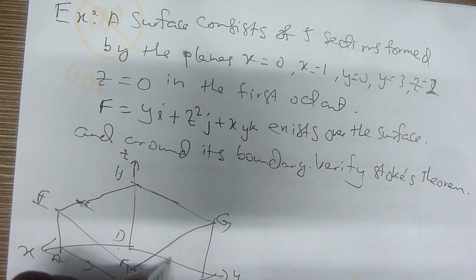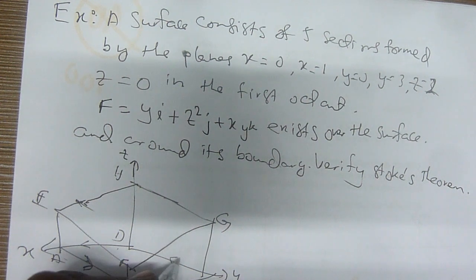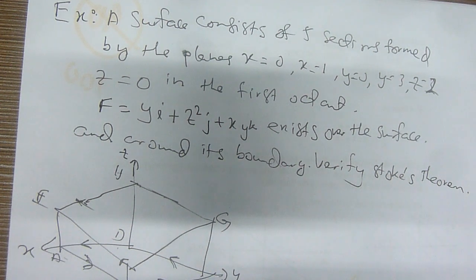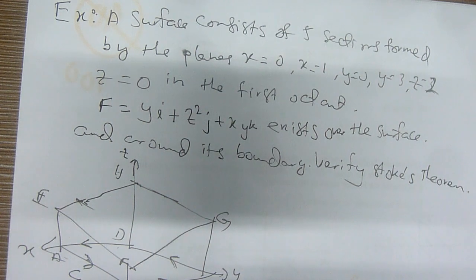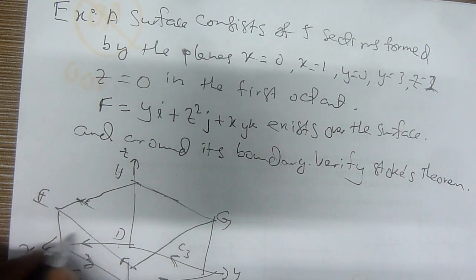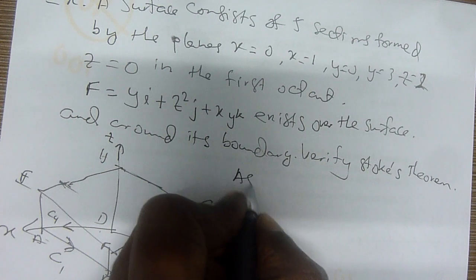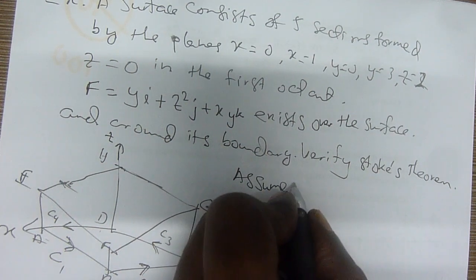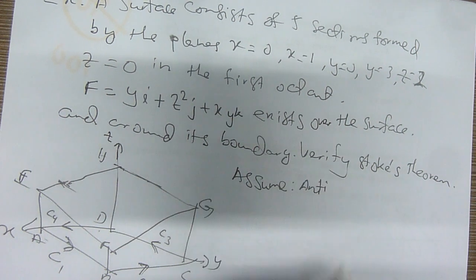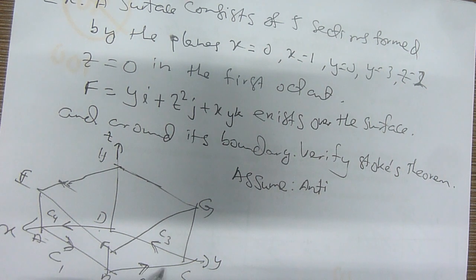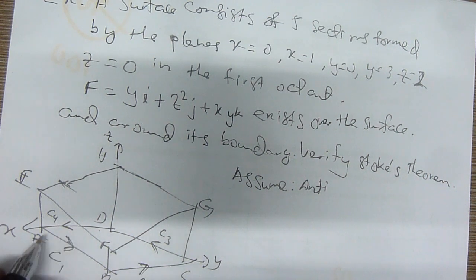Similarly, we follow the same approach. In this case you cannot assume freely — I will let you know because the boundary of the surface must always be given. Depending on the question, we have C1, C2, C3, C4. Now I'm assuming — sometimes the direction is not mentioned. They may say there is a boundary, but they never mention whether it's clockwise or anti-clockwise.